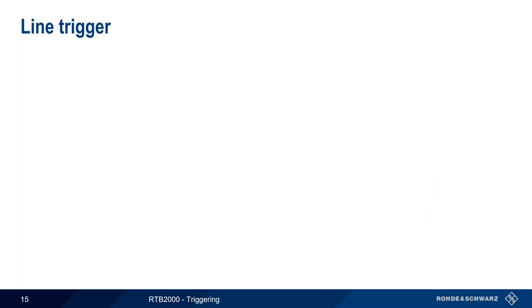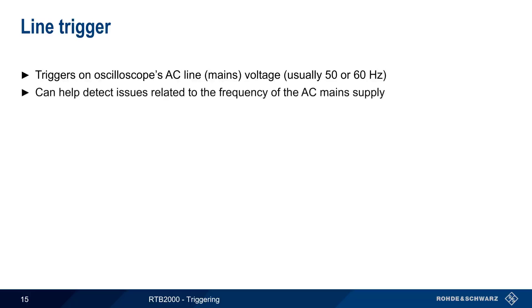A line trigger, also sometimes called a mains trigger, triggers on the AC line or mains voltage, which usually has a frequency of either 50 or 60 hertz, depending on geography. The line trigger is used to help detect issues that are related to the frequency of the AC mains supply, that is, problems which occur at 50 or 60 hertz intervals.